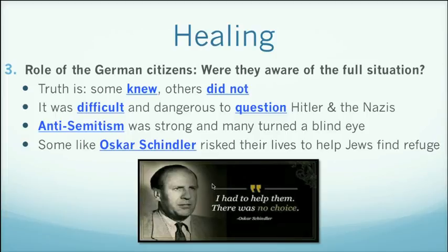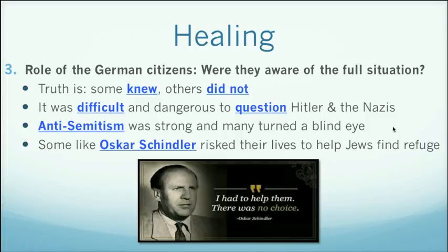It was very difficult and dangerous to question Hitler and the Nazis. Even if you were against it, even if you weren't anti-Semitic, what could you do? It becomes very difficult for German citizens — those not in the army and those who didn't affiliate with Nazism — to stand up, because anti-Semitism was very strong and many turned a blind eye. There were a lot of people who wanted this to happen or were okay with it happening. That's why stories like Oskar Schindler's matter. He wanted to make money with his factory but used it to harbor Jews, keep them safe, and put them on a list to ensure they didn't go to Auschwitz or other death camps. Some like Oskar Schindler risked their lives to help Jews find refuge, but such stories are very, very few, unfortunately.